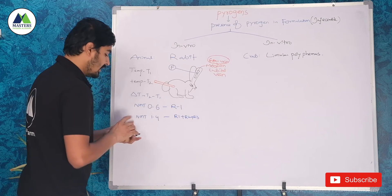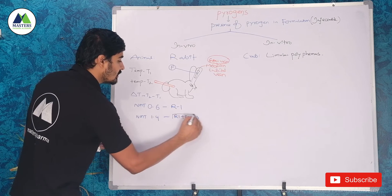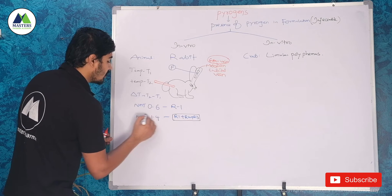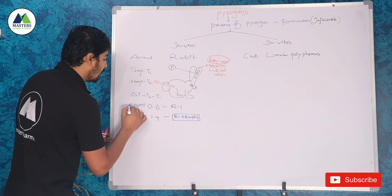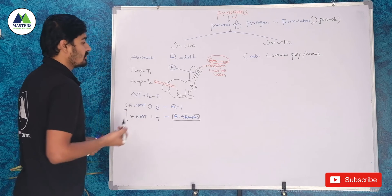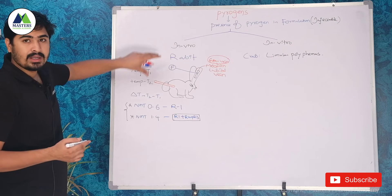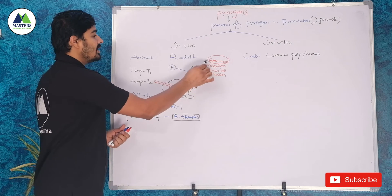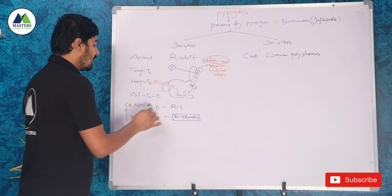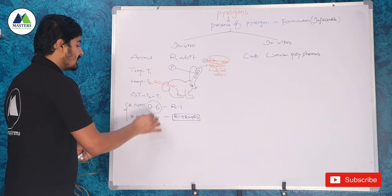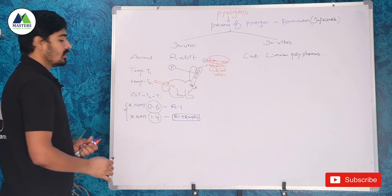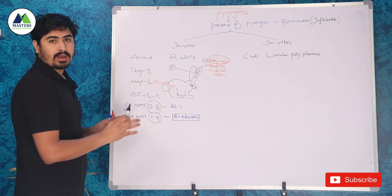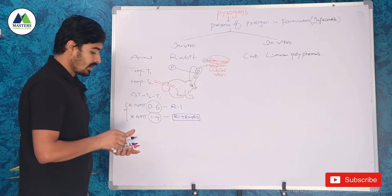For a group of three rabbits, we sum the change in temperature, and that should not be more than 1.4°C. These are the limits for the rabbit in vivo test. If the temperature differences are within these limits — not more than 0.6 for single, not more than 1.4 for group — the formulation is considered non-pyrogenic, meaning there are no pyrogens present.